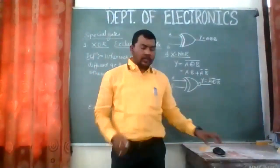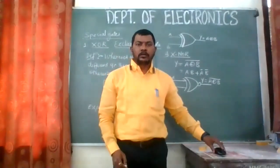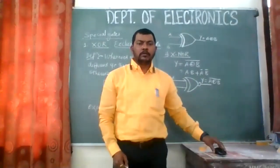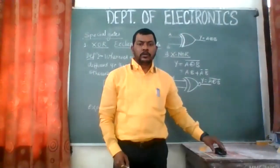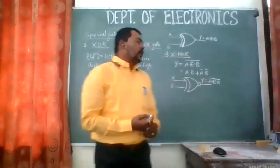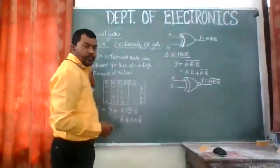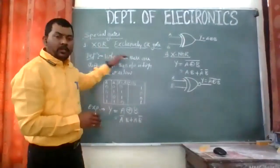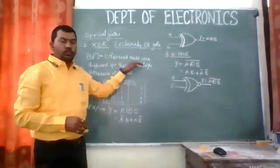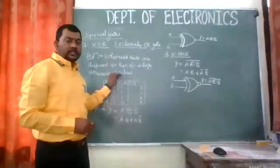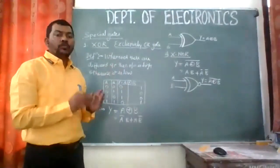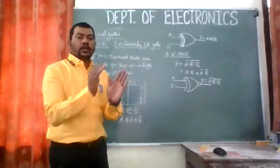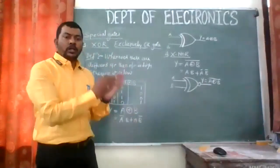We will be starting with a new topic: De Morgan's Theorem. XNOR is the complement of XOR — just opposite. XNOR definition: whenever there are different inputs, output is low; otherwise it is high. For the same inputs, output is high; for different inputs, output is low. That is the XNOR gate — Exclusively NOR gate.